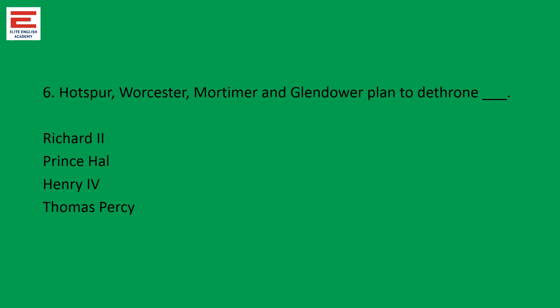Question six: Hotspur, Worcester, Mortimer, and Glendower plan to dethrone Henry the Fourth. Prince Hal belongs and is the son of Henry the Fourth, so he does not come there. Richard the Second is not in the party because Henry the Fourth and others dethrone Richard the Second. Thomas Percy belongs to the other side only. So definitely, Henry the Fourth is the answer.